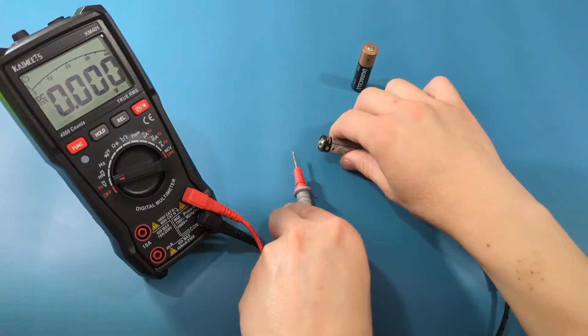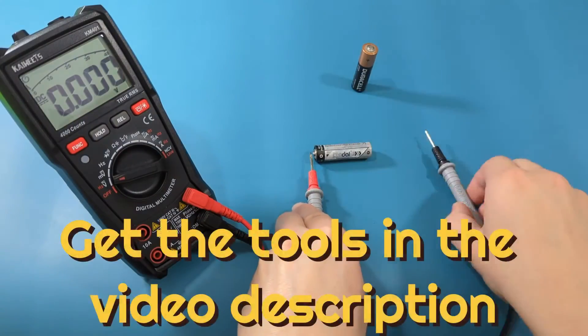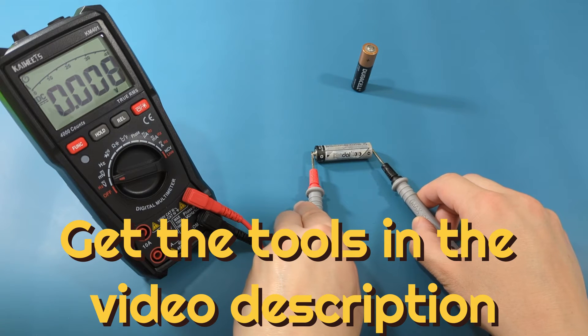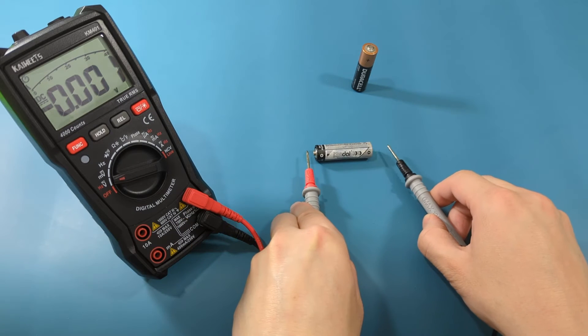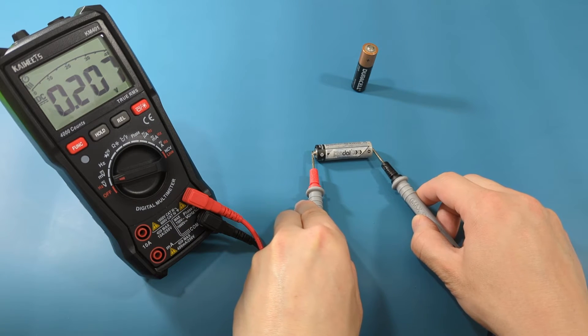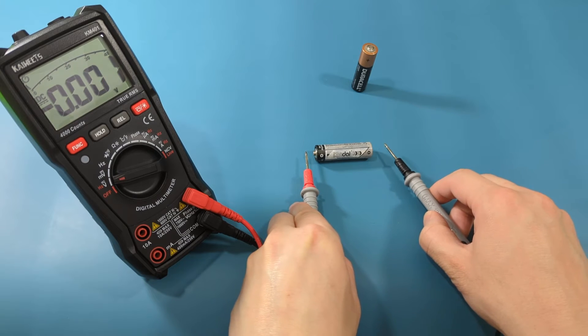Let's test the other battery. Since the reading is below 1 volt, this battery is bad.